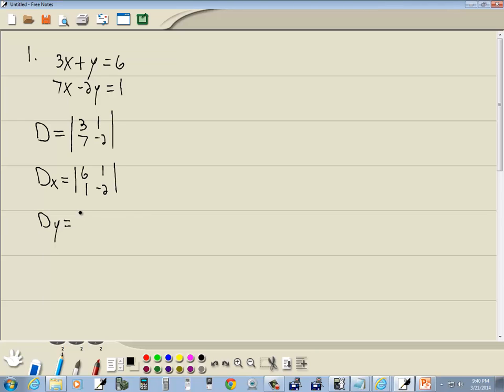And D sub y, you're going to take your original D and replace the y column, the 1, negative 2, with numbers on the right side. So this remains 3, 7, and this becomes 6, 1.